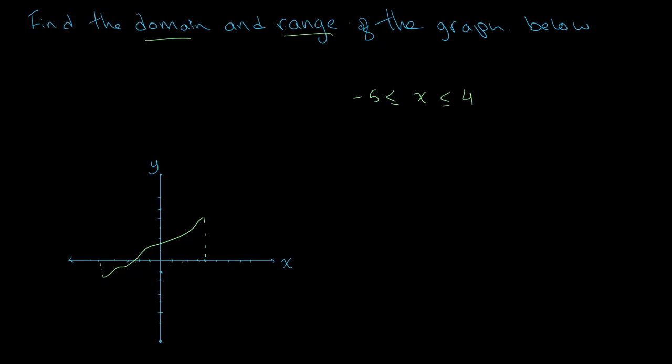Now to find the range we need to look at all of the possible values of y. So looking at this graph we can tell that y can be anything between 4 and negative 2, or the range of the function is negative 2 is less than or equal to y which is less than or equal to 4. And this is our domain and here we have our range.